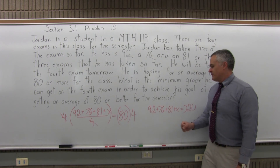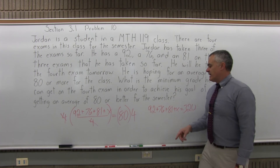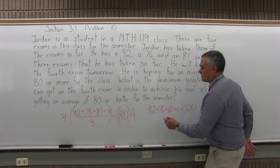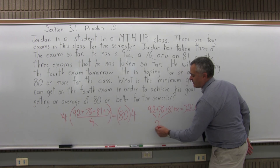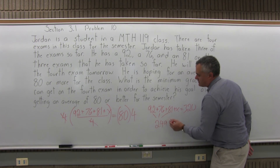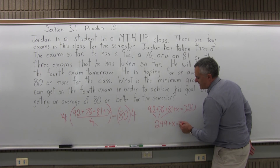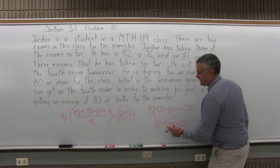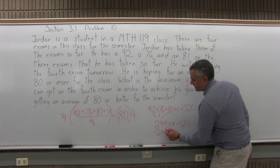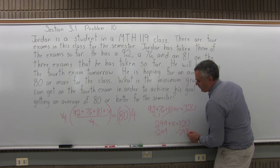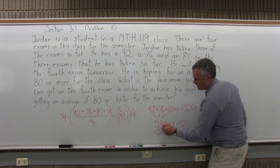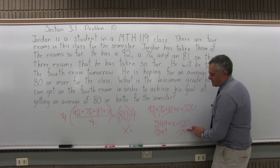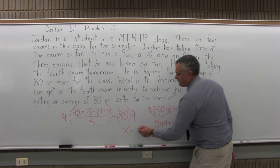Let's make it look even better. Let's add these numbers together — there's no reason why we can't. So 92 and 76 is 168, and 168 plus 81 is 249. So 249 plus exam four has to add up to 320. Now, to get X by itself, subtract 249 from both sides. On the left, 249 minus 249 gives just X. On the right, 320 minus 249 equals positive 71.